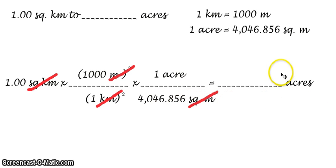And we are left with the final unit in acres. We then do the calculation, which will give us the answer equal to 247.105 acres.